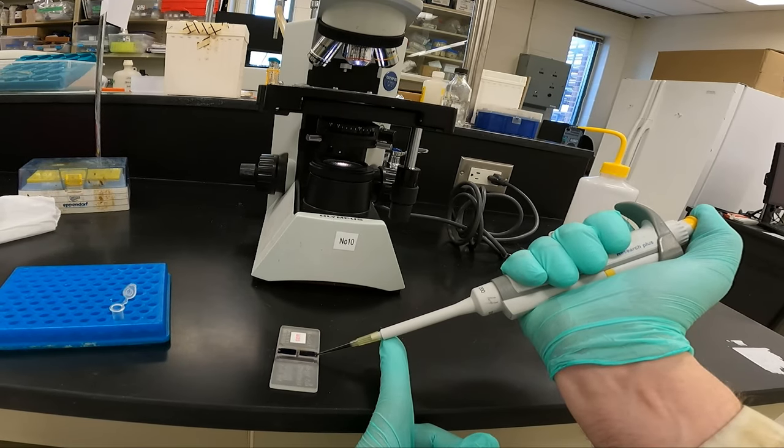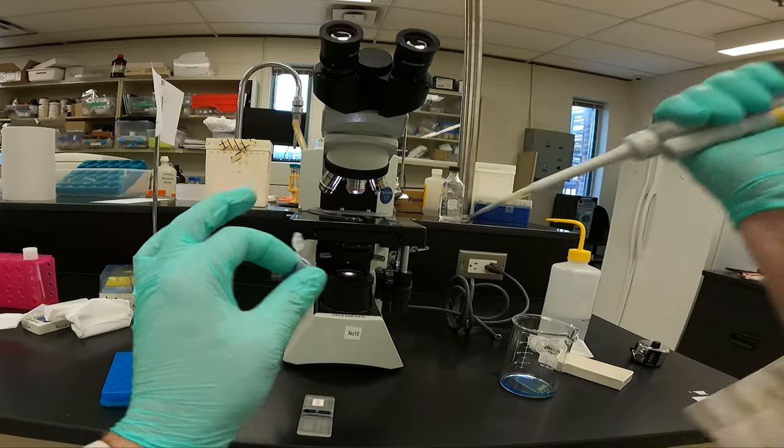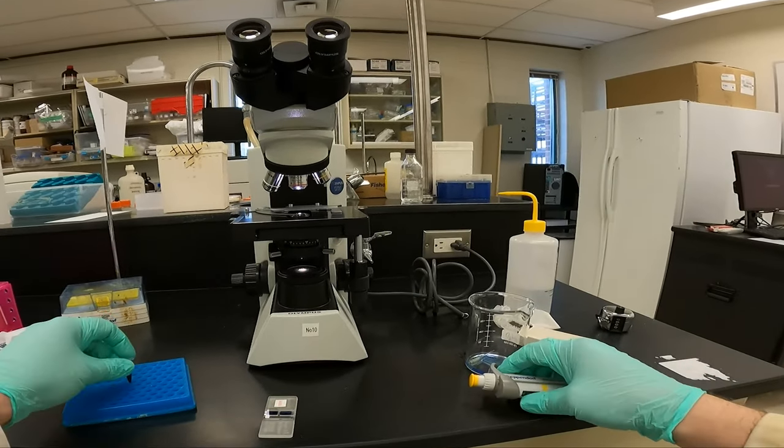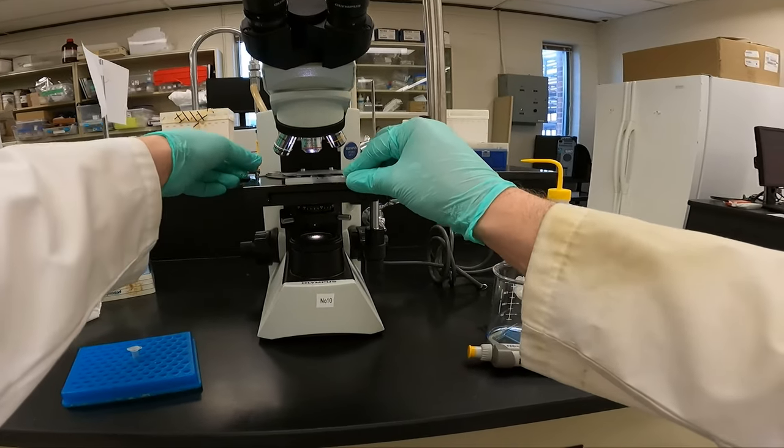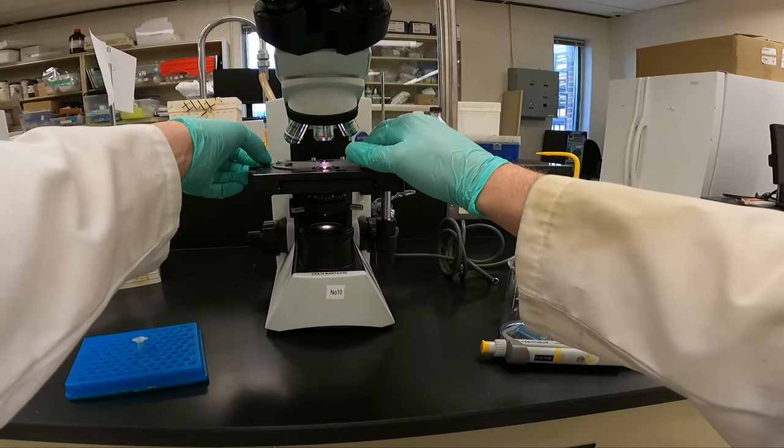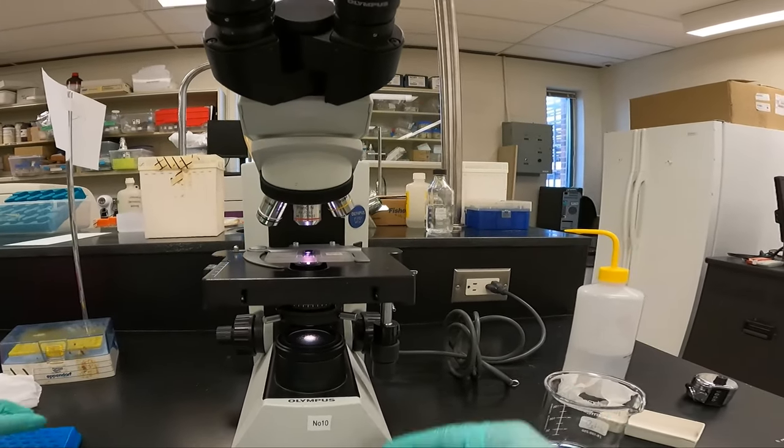If you overfill it, or there's bubbles, redo it. I'll save the extra in case I make a mistake and have to redo it. And now we're ready to count cells. Place it on the stage with the stage clamp, and then view at low magnification.